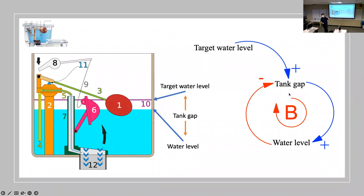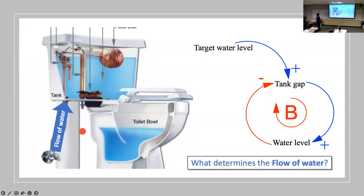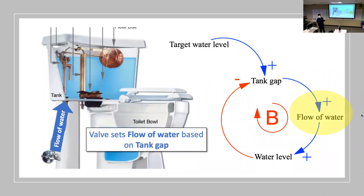This high-level description doesn't really tell us about the dynamics — the valve doesn't show up explicitly. If we really look at the toilet, the float adjusts a valve which controls the flow of water. To get a dynamical model, we need the flow of water to be explicitly modeled.